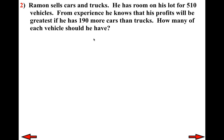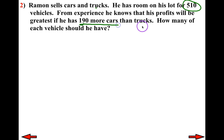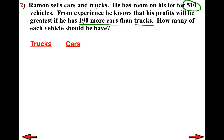So let's see how you did. Raymond sells cars and trucks — he has room on his lot for 510 vehicles. From experience, he knows his profit will be greatest if there are 190 more cars than trucks. How many of each vehicle should he have? There are two things we don't know: how many trucks and how many cars. We're going to assign a variable that we can easily correlate to whatever we're looking for.